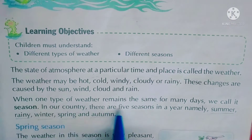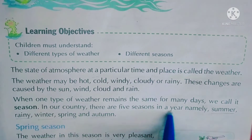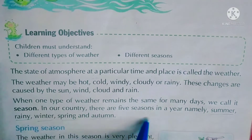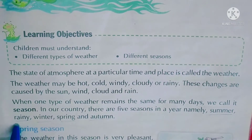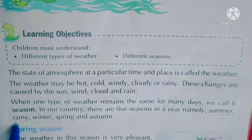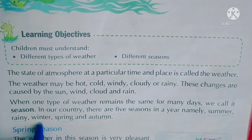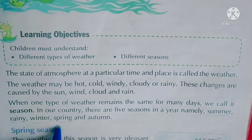In our country, there are five seasons in a year - हमारे देश में पाँच तरह की रितू होती हैं एक साल में। जिनका नाम है: Summer - गर्मी की रितू, Rainy - वर्षा रितू, Winter - सर्दियों की, Spring - बसंत, and Autumn - पतझड़।